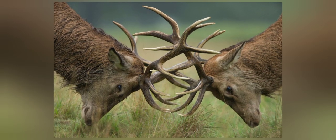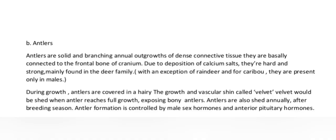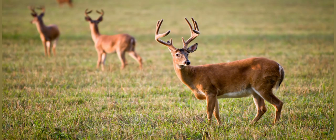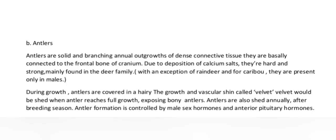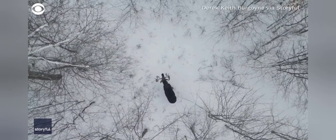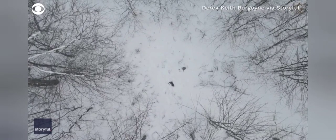Antlers are solid and branching annual outgrowths of dense connective tissue. They are directly connected to the frontal bone of the cranium. Due to deposition of calcium salts, they are hard and strong, and are mainly found in the deer family. With the exception of reindeer and caribou, they are present only in males. During growth, antlers are covered in a hairy, vascular skin called velvet. Velvet is shed when the antler reaches full growth, exposing the bony antlers. Antlers are also shed annually after the breeding season. Antler formation is controlled by male sex hormones and anterior pituitary hormones.